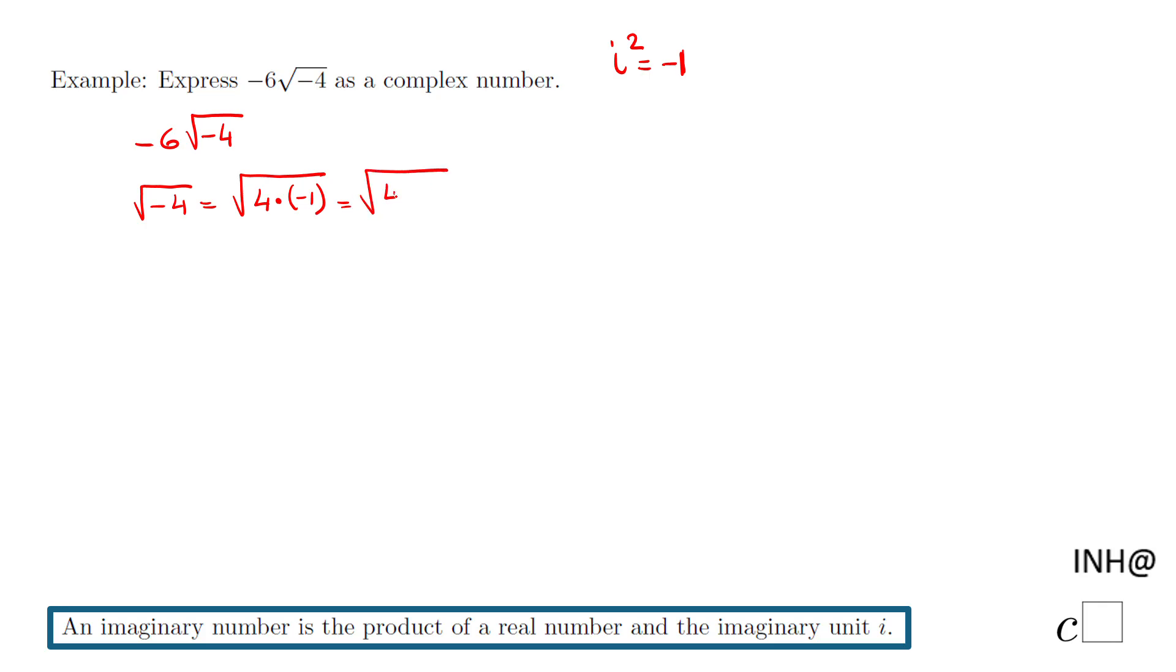We have 4 times i squared, and now what can we do? We can break this square root of a product into a product of square roots.